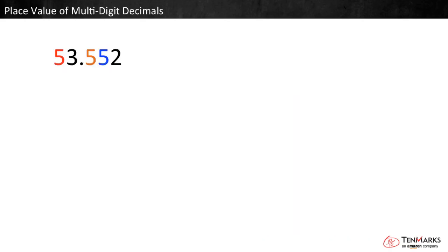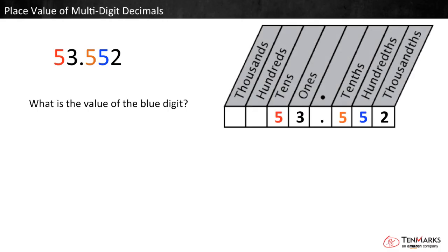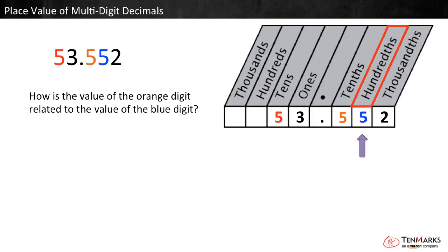Let's solve a problem. Consider the decimal number fifty-three and five-hundred fifty-two thousandths. What is the value of the blue digit? Let's write the number in a place value chart to help. The blue digit is a five in the hundredths place — it is worth five times one hundredth, or five hundredths. The orange digit is a five in the tenths place. It is worth five times one tenth, or five tenths.